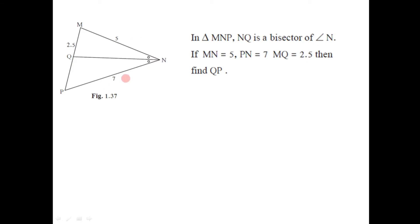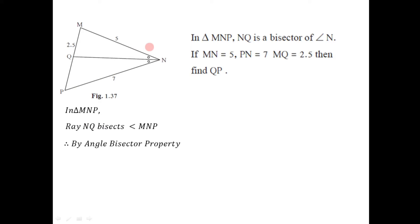The remaining two sides of this triangle are MN and NP. So the ratio of MN to NP must be equal to the ratio of MQ to QP. Note that if we take MN in the numerator for the first ratio, we must take MQ in the numerator for the second ratio. We cannot take QP divided by MQ, because that would not be the same proportion as MN divided by NP.